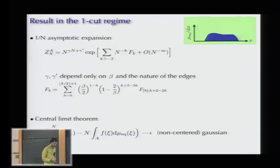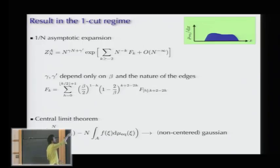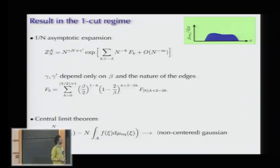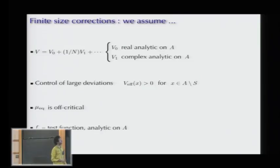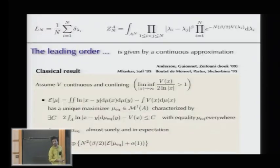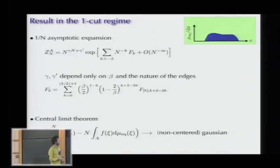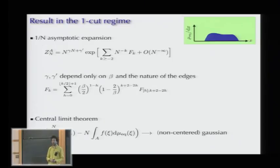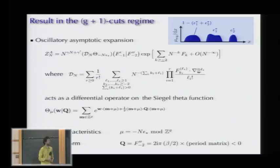In the one-cut regime, the partition function has a 1/n expansion of this form: there is some algebraic decay with universal exponents gamma and gamma' depending only on beta and the nature of the edges, and computable coefficients f_k that depend on beta in a simple way when the potential has the form beta/2 times V. When you compute fluctuations of linear statistics, you find convergence in law to a non-centered Gaussian variable—so it's a central limit theorem.